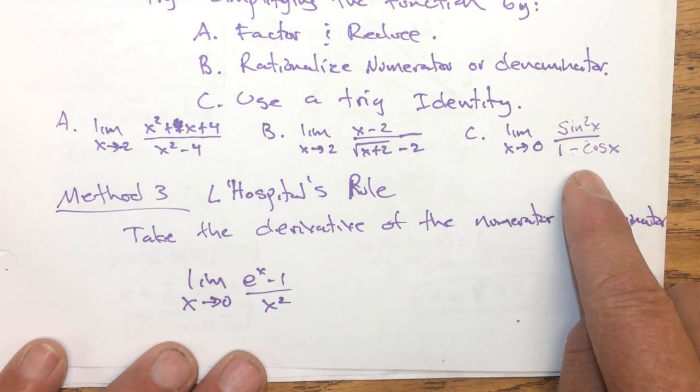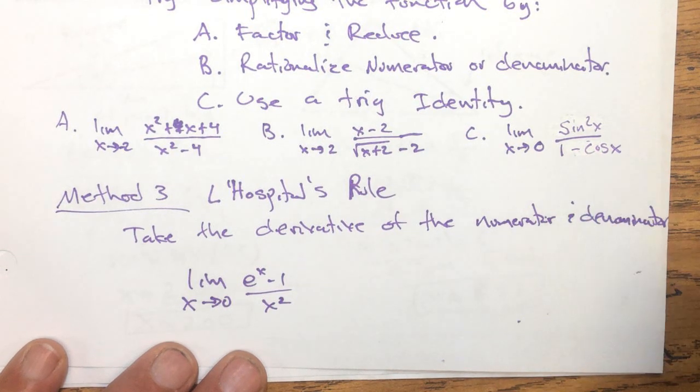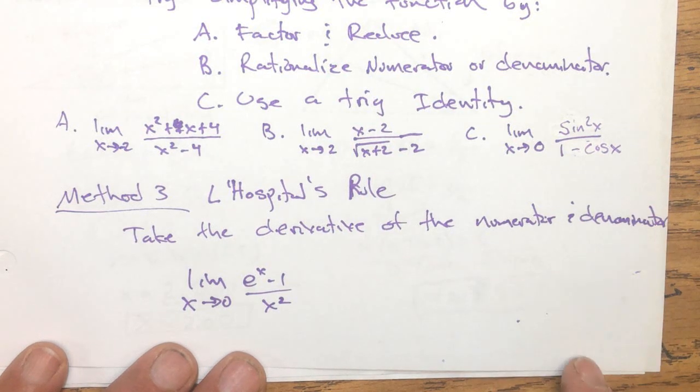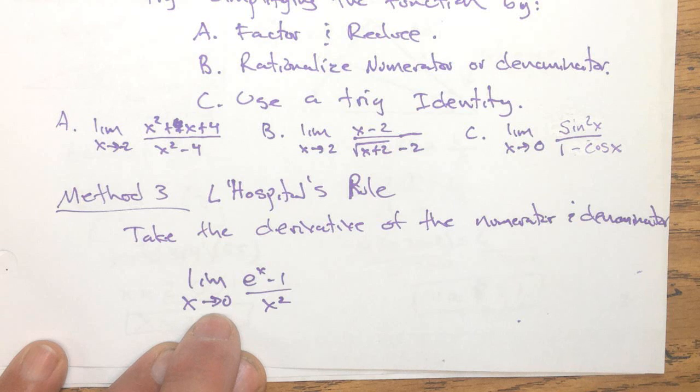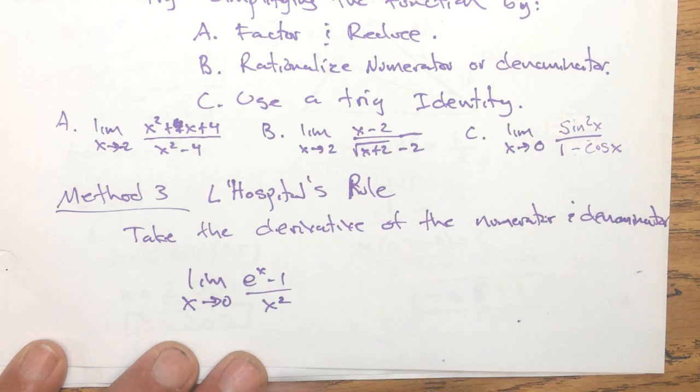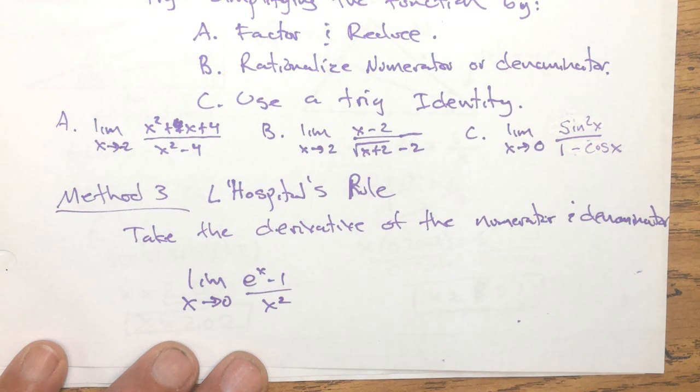But I want you to just think about that one, because actually there's a question on the work I'm going to give you, that you actually have to simplify that instead of using L'Hopital's rule. So, they might want you just to know how to do that. So, I take the derivative of the top and bottom and then reevaluate using direct substitution. So, those are the methods that we used.